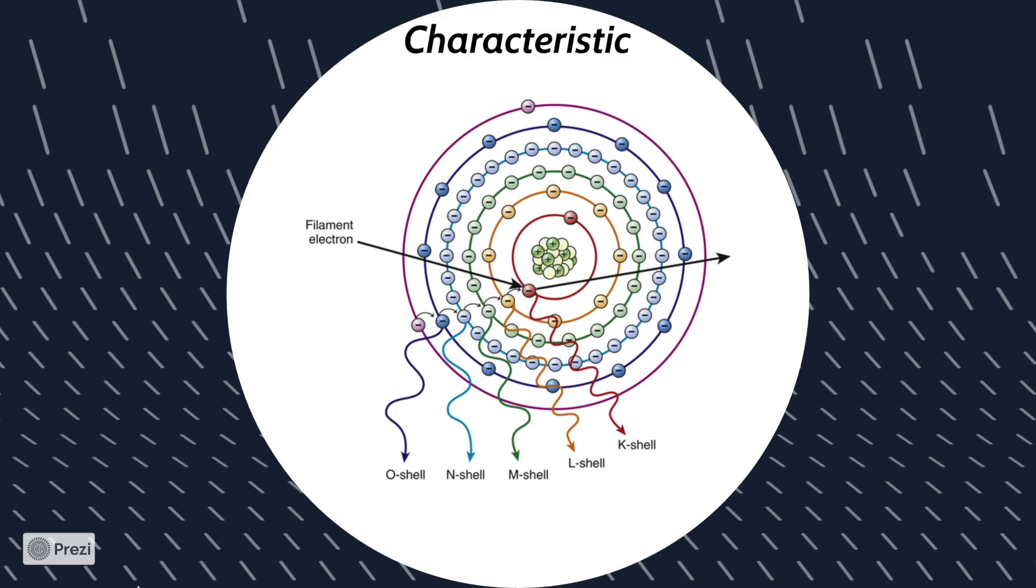This interaction works by the filament knocking down an electron from the inner shell, which is the K shell that has 69.5 keV. The incoming electron strikes the inner shell, causing both electrons to exit.